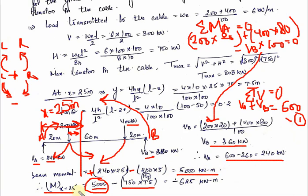Putting the values into the formula BM = beam moment − H × Y: BM = 5000 − 750 × 7.5 = 5000 − 5625 = −625 kNm.